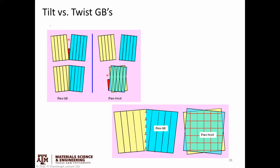As a summary: a tilt grain boundary has the axis of rotation lying in the plane of the grain boundary interface, while a twist grain boundary has the axis of rotation perpendicular to — coming out of — the grain boundary interface. Pure tilt grain boundaries at low angles can be described as having edge dislocations accommodating the misorientation, and pure twist grain boundaries can be described as having screw dislocations lying in the plane of the interface. These are useful end members; in the real world, many grain boundaries are neither pure tilt nor pure twist, but a combination of both — accommodated by a mix of edge and screw dislocations.